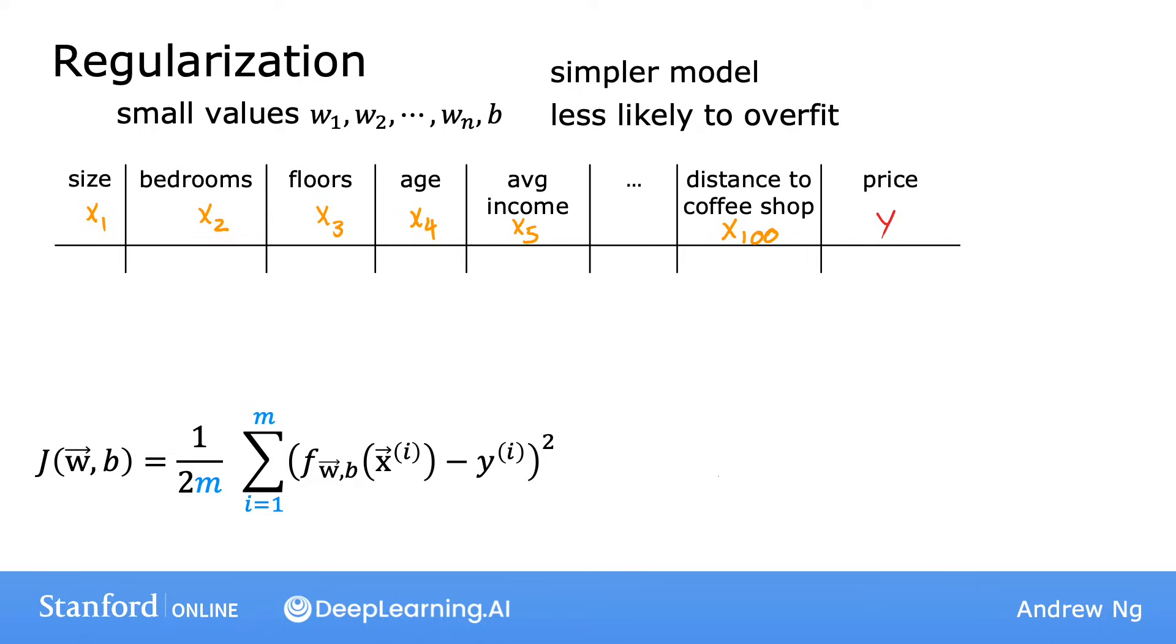On the last slide, we penalize or we say we regularize only w3 and w4. But more generally, the way that regularization tends to be implemented is if you have a lot of features, say 100 features, you may not know which are the most important features and which ones to penalize. So the way regularization is typically implemented is to penalize all of the features or more precisely, you penalize all the wj parameters. And it's possible to show that this will usually result in fitting a smoother, simpler, less wiggly function that's less prone to overfitting.